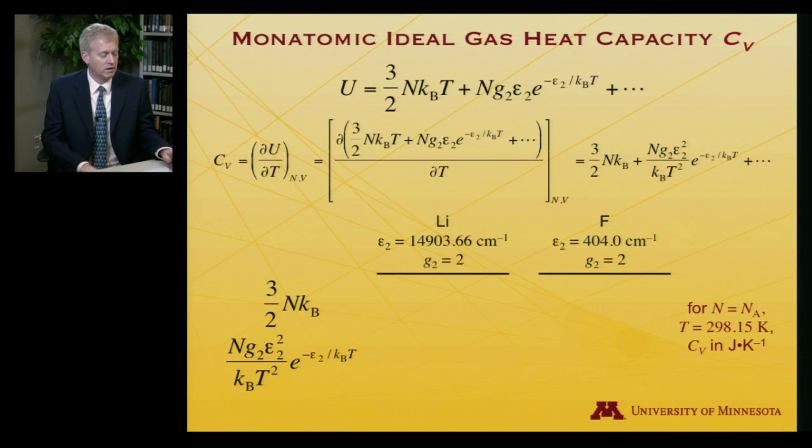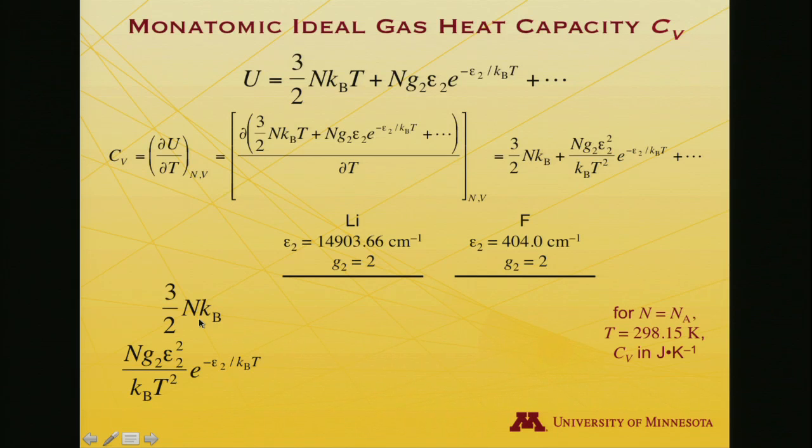I want to come back to our example systems of lithium and fluorine and ask what's the contribution here. We're continuing to use Avogadro's number of atoms at room temperature. The heat capacity is expressed in joules per kelvin. Remember, heat capacity tells you how much energy does it take to raise the temperature of the system by one degree kelvin. The three halves Nk term, given that it's Avogadro's number for N, means three halves R, three halves times the universal gas constant: 12.47 joules per kelvin is the heat capacity of atomic lithium gas. That's just a set of constants, exactly the same for fluorine.